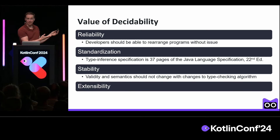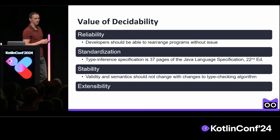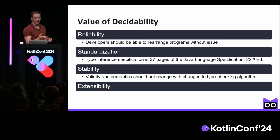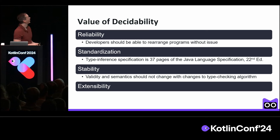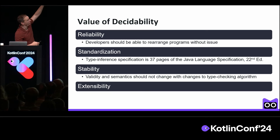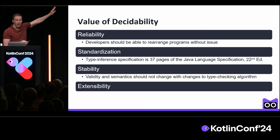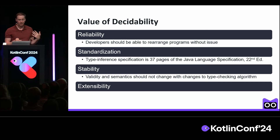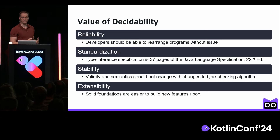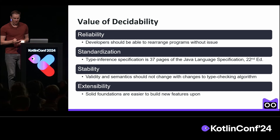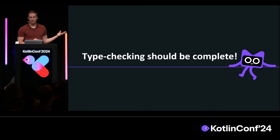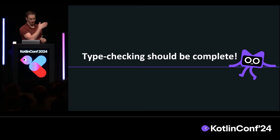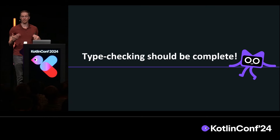Lastly, we'd like to be able to extend the type system with new features. But the team is getting bogged down by the fact that every extension requires making changes to the type checking algorithm, which then runs into standardization, reliability, and stability issues. It's slowing the process down, and in general it's just easier to add things onto a strong foundation. So that's why I think type checking should be complete — meaning every valid program according to the type system is going to be accepted by the type checker.